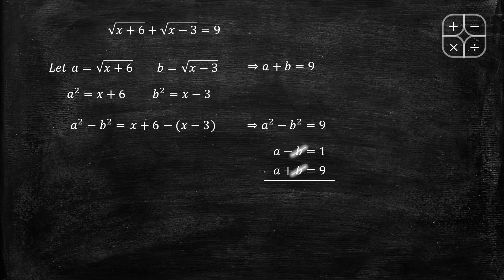We have a plus b equals 9 and a minus b equals 1. Adding these equations: 2a equals 10, so a equals 5.